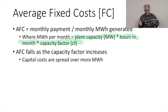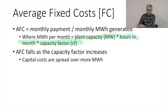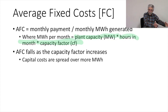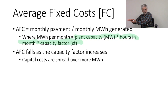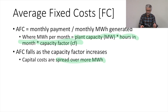It's clear from this calculation that average fixed cost will fall as the capacity factor of the plant increases. As capacity factor increases, that increases the megawatt hours we generate. Our monthly fixed cost stays the same, so the more we generate, the more we're dividing into those fixed costs, and the fixed costs tend to fall as we run the power plant at higher and higher capacity factors. The capital costs are spread over more megawatt hours, so the average fixed costs fall.